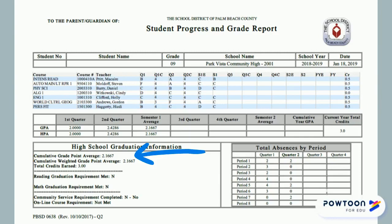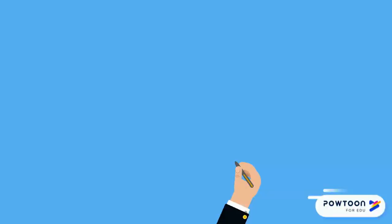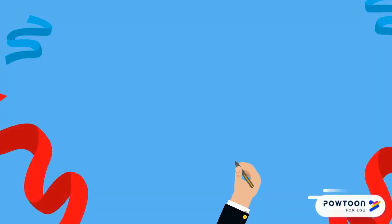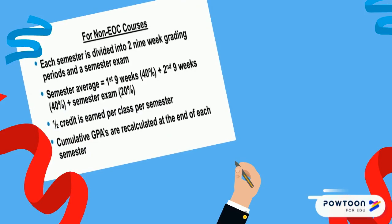Now let's look at how your semester and final grades are calculated. For non-EOC courses, each semester is divided into two nine-week grading periods and a semester exam. The two nine-week grades each make up 40% of the semester average, and the exam is 20% of the semester average. For these courses, one half credit is earned for each class each semester, and the cumulative GPA is recalculated at the end of each semester including these grades.